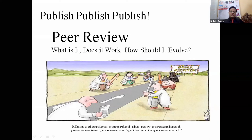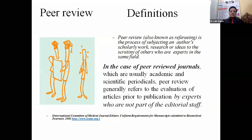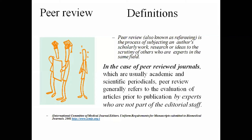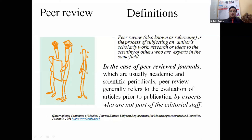Most scientists regard the new streamlined peer review process as quite an improvement over previous ones. By definition, peer review — also known as refereeing — is the process of subjecting an author's scholarly work, research, or ideas to the scrutiny of others who are experts in the same field. For example, if you are publishing a paper in biochemistry, the person reviewing your paper should be from biochemistry. Peer review generally refers to the evaluation of articles prior to publication by experts who are not part of the editorial staff, per the International Committee of Medical Journal Editors.